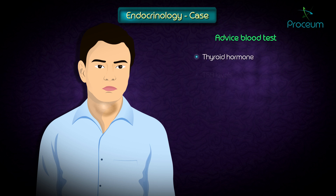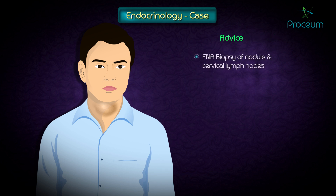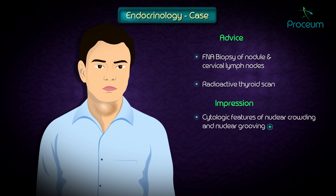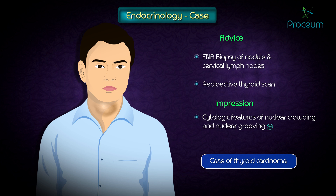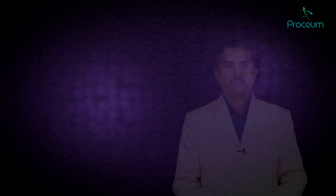You order blood tests for thyroid hormone and TSH levels, a fine needle aspiration biopsy for both the lump in the neck and the enlarged cervical lymph nodes, and a radioactive thyroid scan. You suspect the lesion may show cytologic features of nuclear crowding and nuclear grooving. This is a case of thyroid carcinoma, so let us discuss a few important points about thyroid neoplasms.